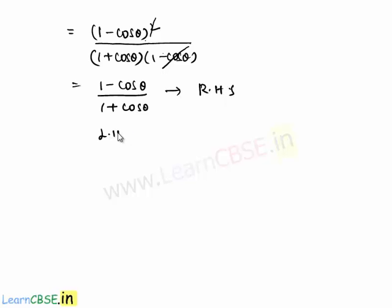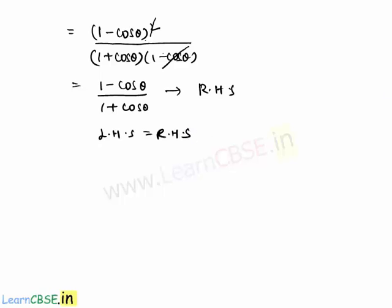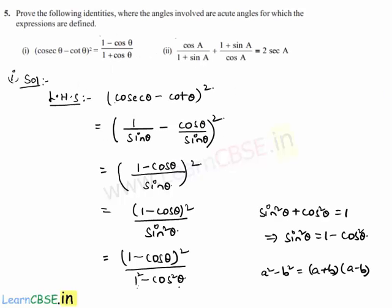So here LHS equals RHS. We can conclude that (cosecant θ - cot θ)² = (1 - cos θ) / (1 + cos θ).